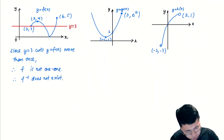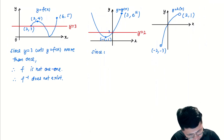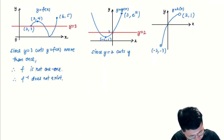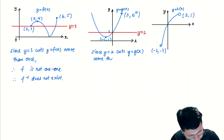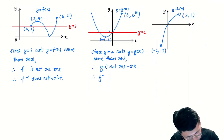For the second graph g(x), since the horizontal line y equals 2 cuts the graph of y equals g(x) more than once, g is not one-to-one, and therefore g inverse does not exist.